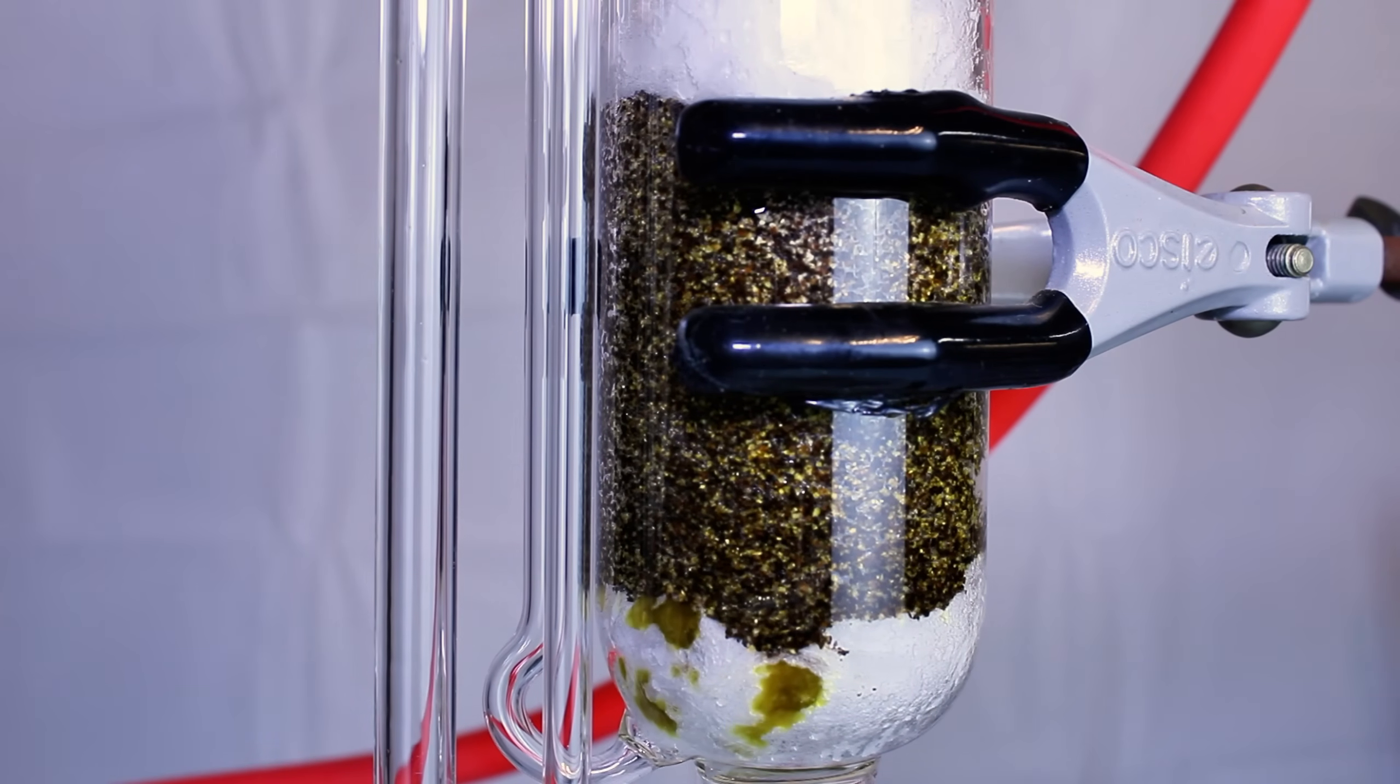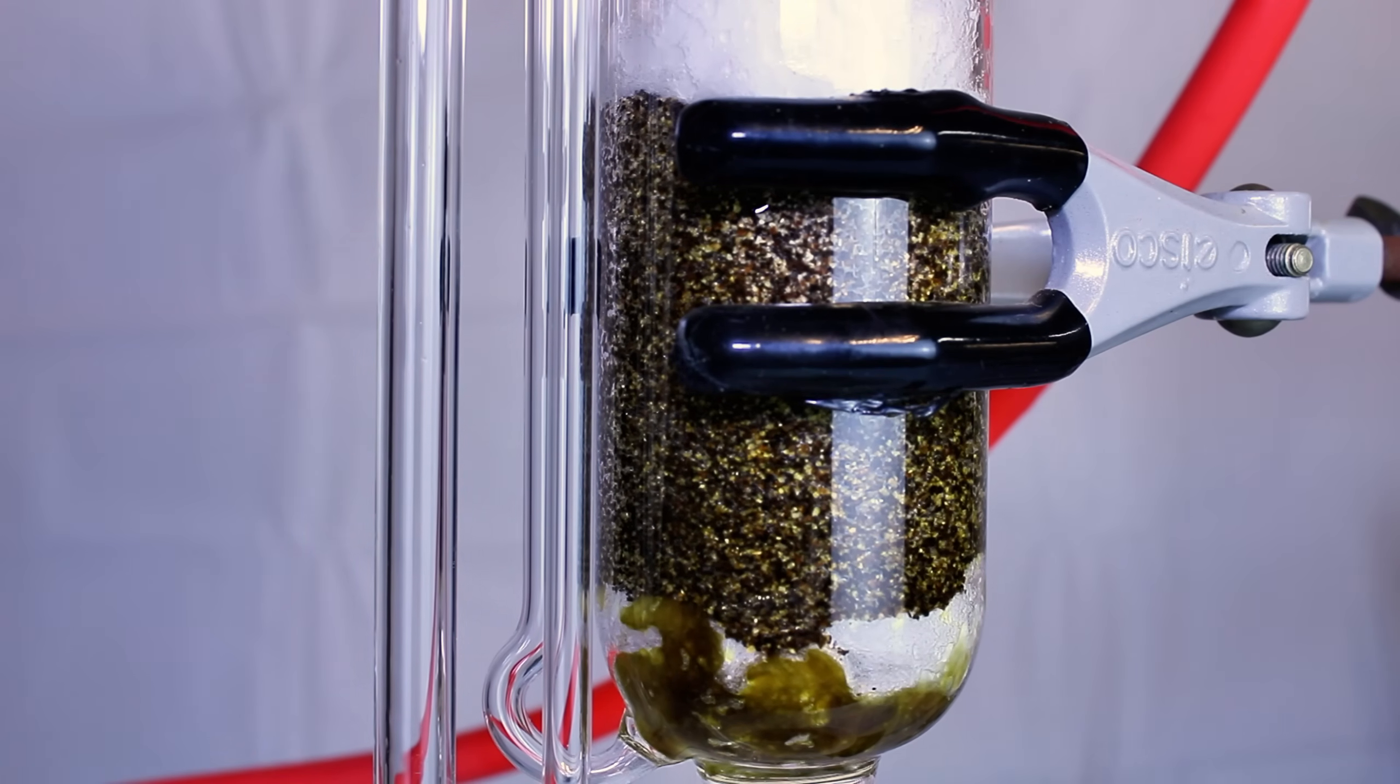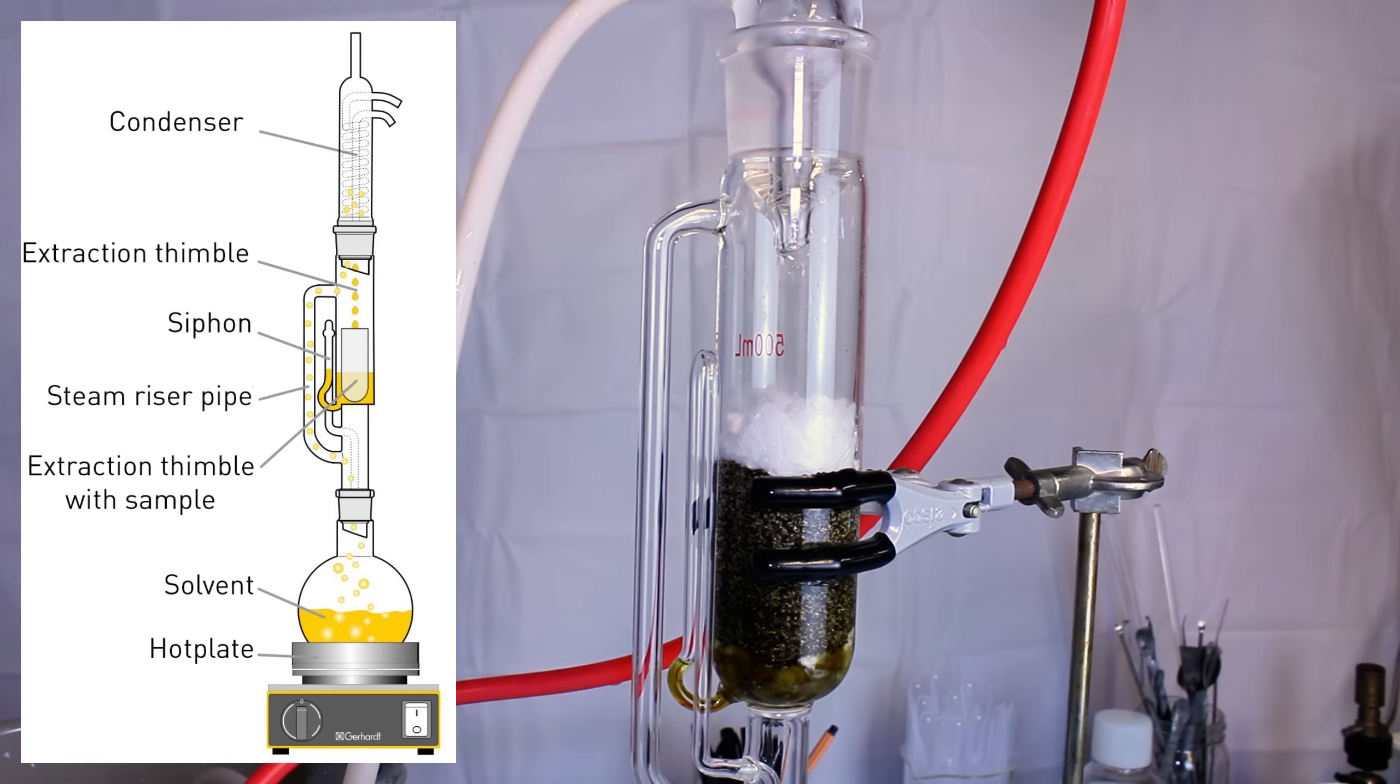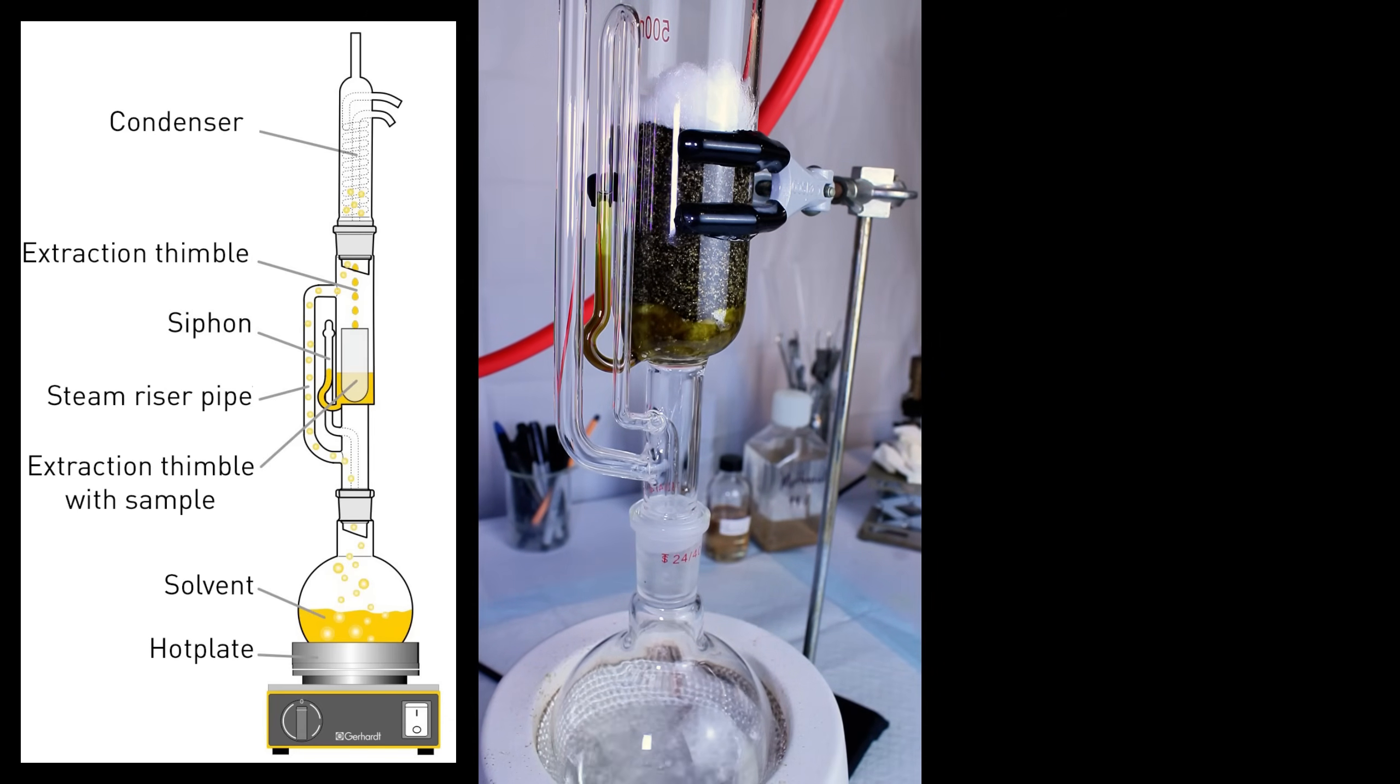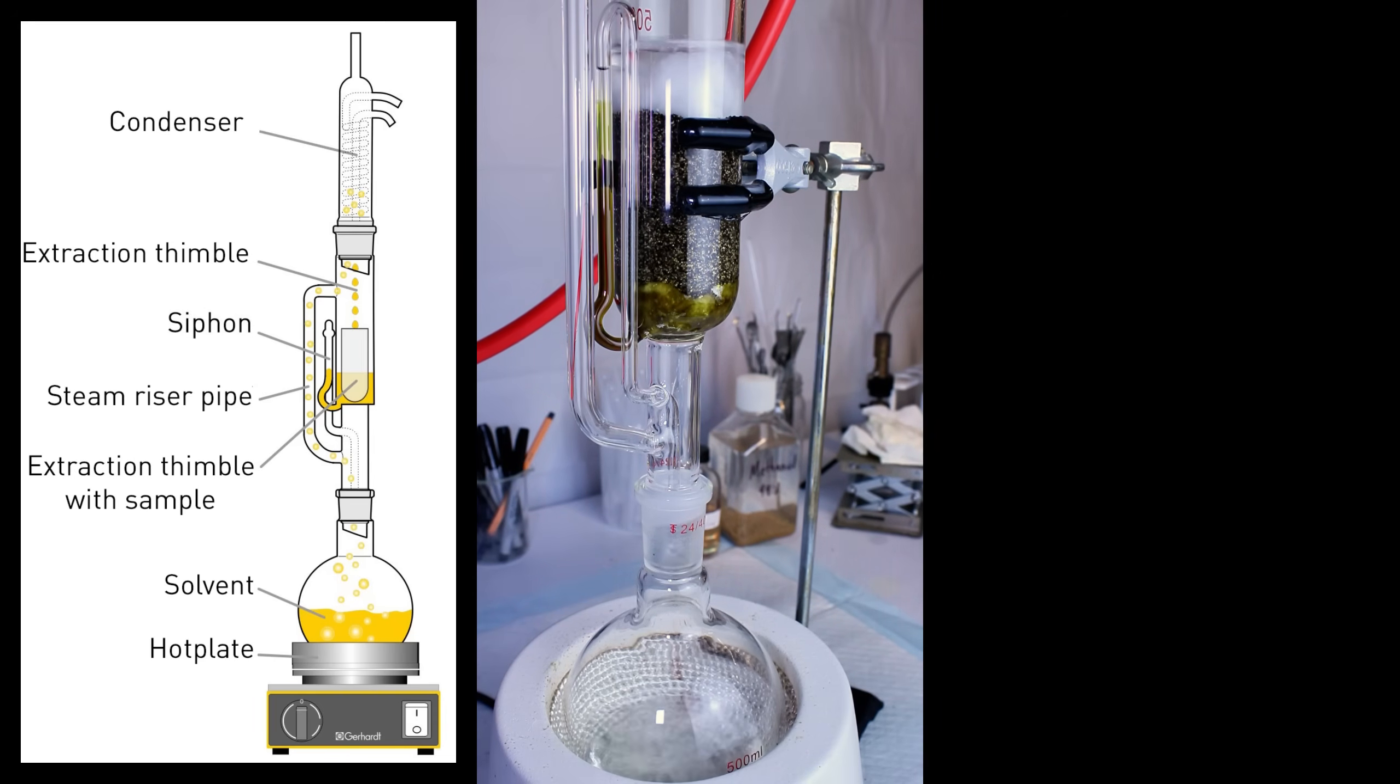As the volume of isopropyl in the Soxhlet Extractor increases, it begins to travel up the secondary siphon arm, and this is where things start to get interesting. Here's a diagram of the Soxhlet Extraction apparatus so you can better understand what I'm talking about. Basically the idea here is that when the solvent rises to the top of the bend in the secondary arm, it'll create a vacuum which will pull all of the isopropyl through the black pepper and back into the boiling flask.